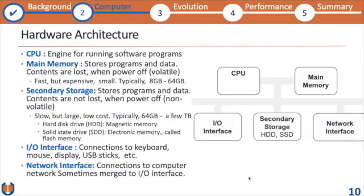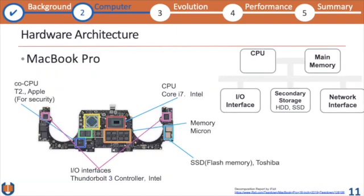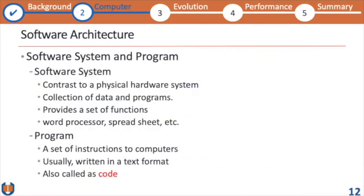It's very interesting that the computer doesn't understand anything except zeros and ones. In Part 1 we learned about hardware, so in Part 2 we will learn a little about software. Before going to software architecture — as I said, it is intangible and cannot be seen visually.